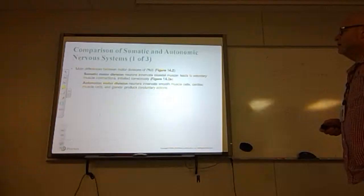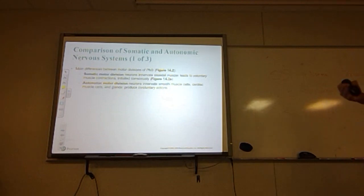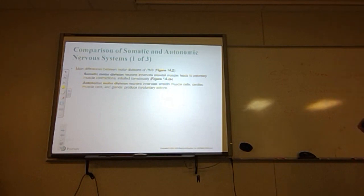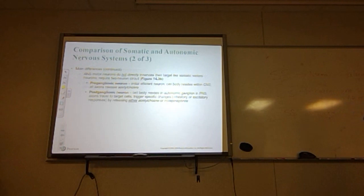The main differences between motor divisions: the somatic motor division innervates skeletal muscle, leading to voluntary muscle contraction — these actions are initiated consciously. The autonomic motor division innervates smooth muscle cells, cardiac muscle cells, and glands, producing involuntary reactions. So somatic motor division equals voluntary; autonomic motor division equals involuntary.